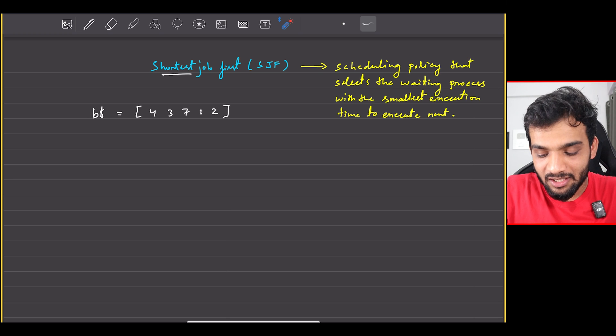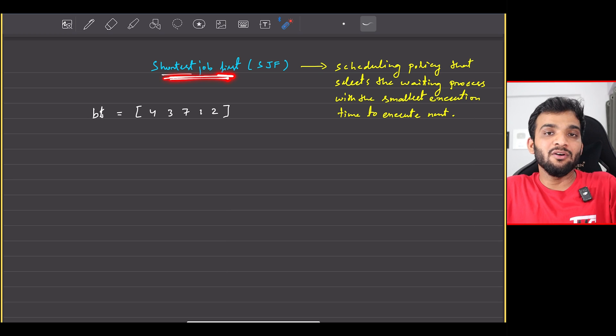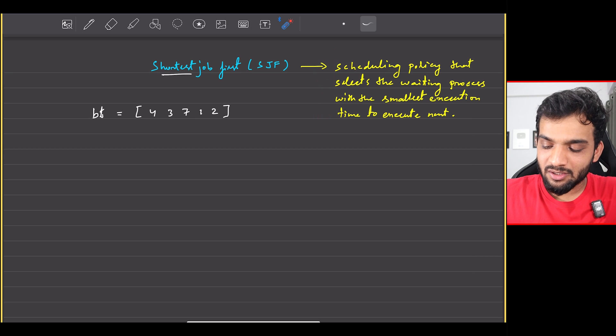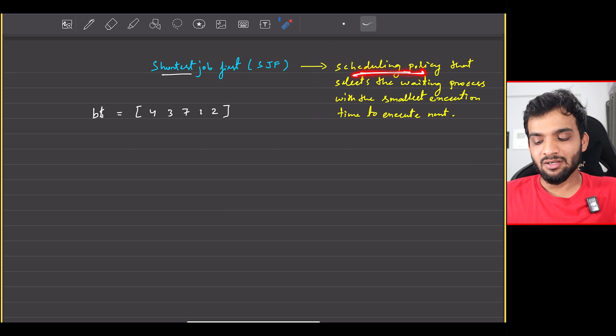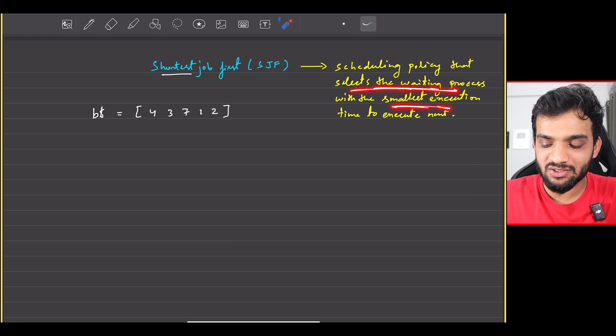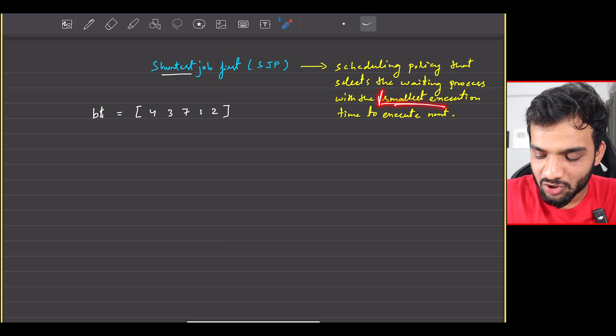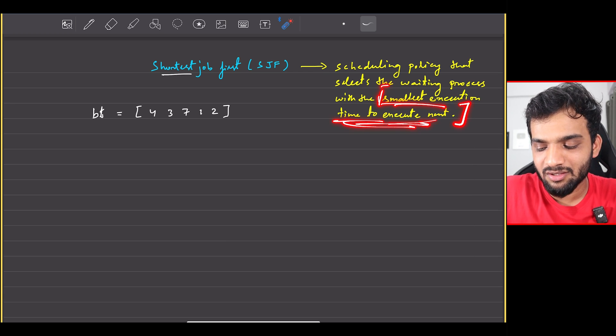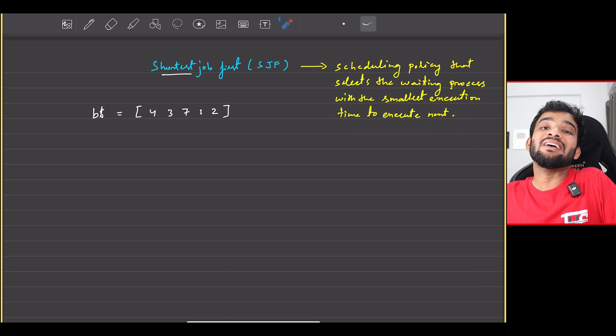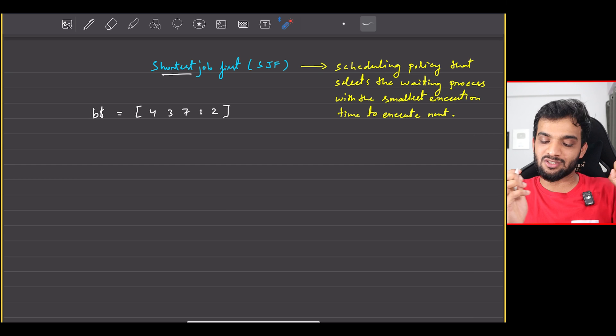Following the Shortest Job First algorithm. Now what is the Shortest Job First algorithm? I've written it down over here. Let's quickly go through it: a scheduling policy that selects the waiting process with the smallest execution time to execute next. This is important - a scheduling policy which always executes the smallest execution time first.